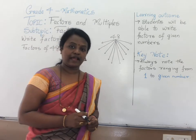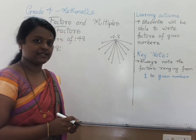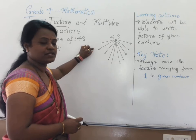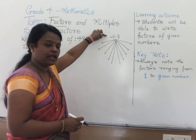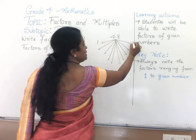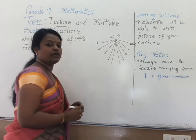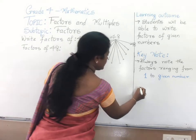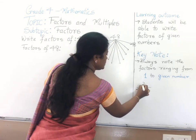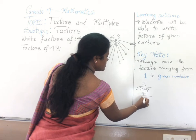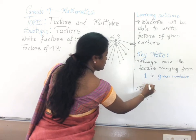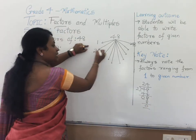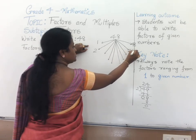Let us try with one more example. Let us write factors of 48. Same way I have drawn a tree diagram, which is helpful for you. Let us start with 1: 1 48s are 48. How about 2? We can check by dividing 48 by 2. 48 is completely divisible by 2, that is 2 24s are 48.